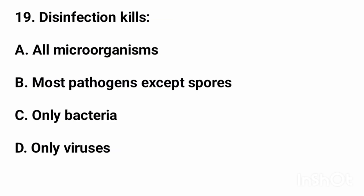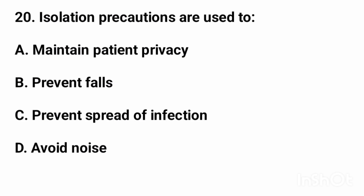Question number 19: Disinfection kills? The right answer is option B: most pathogens except spores. Question number 20: Isolation precautions are used to? The right answer is option C: prevent spread of infection.